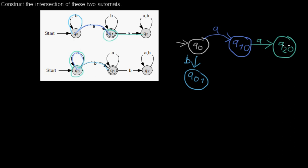Let's continue in state Q20. When we do another A transition, in the first automaton we will stay in Q2, and in the second automaton we will stay in Q0. So here we will just get a loop.